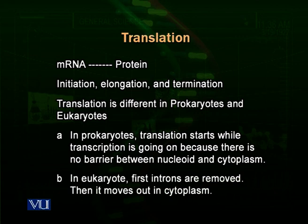In eukaryotes, this is a more complex process because they have a nucleus. The messenger RNA has to travel through the nucleus, move out through the nuclear pores into the cytoplasm where ribosomes are present, and then it has to be translated. So the messenger RNA in eukaryotes is modified, because it has to move a long path and is exposed to various enzymes — nucleases and proteases — present inside the nucleus and cytoplasm. To protect it from enzyme action, two modifications occur in the messenger RNA.